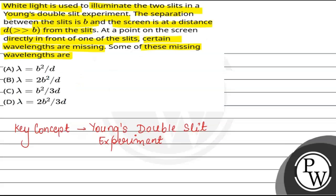So यहाँ पर हमारे पास missing wavelengths कौन कौन सी हो जाएगी? b²/d मतलब option A, और b²/3d मतलब option C. So यहाँ पर हमारे पास जो correct options हैं वो हैं option A और option C. Hope you understood it well. Best of luck.